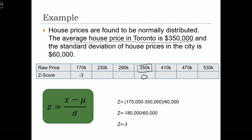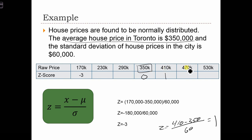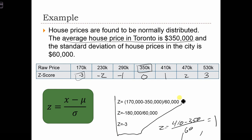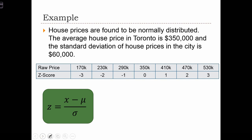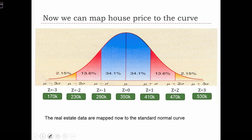What about a value of $410,000? We calculate Z equals (410,000 − 350,000) / 60,000, which gives 60,000 / 60,000 = 1. Adding another $60,000 gives Z = 2, one more standard deviation. Moving down from $350,000 by one standard deviation to $290,000 gives a Z-score of −1; Z = −2 at $230,000; and at $170,000 we have a Z-score of −3. I've shown the math for computing the Z-score for $170,000.